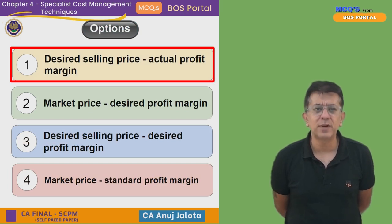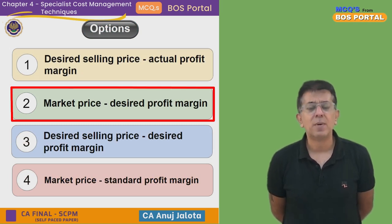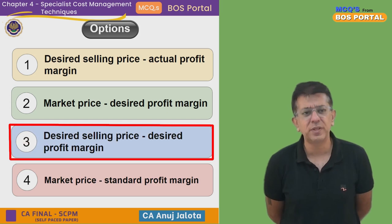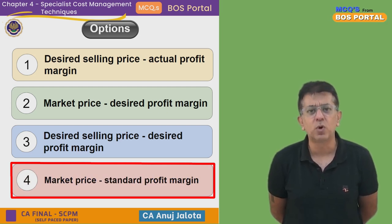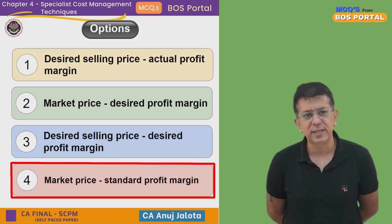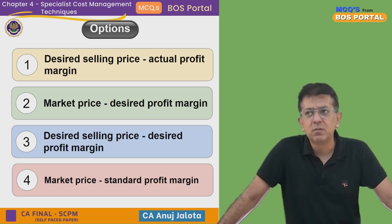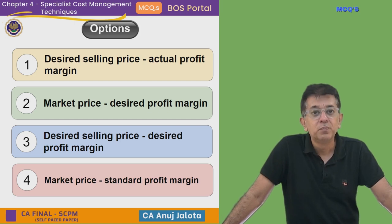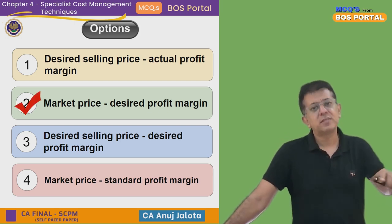Coming back to the four options: first — desired selling price minus actual profit — it's not actual profit, it's a target profit, so first cannot be the answer. Second — market price minus desired profit margin — that could be the answer. Third — desired selling price minus desired profit margin — that could also be the answer. Fourth — market price minus standard profit margin — it's not standard profit margin, so that's out. Out of second and third, second makes better sense because one lakh rupees in my example is not purely a desired price — it is the market-determined price. So the second option is the correct answer.